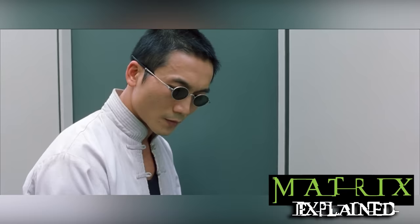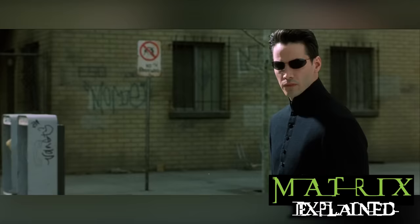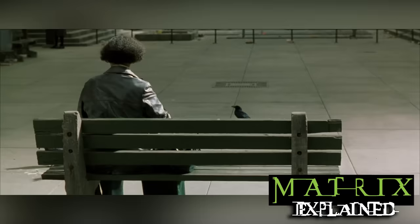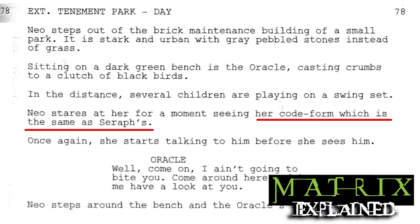Next is probably one of the most disturbing scenes in the entire Matrix saga — one that reveals the Oracle's true evil nature. She says: 'Come around here and let me have a look at you.' This line implies that Neo was afraid of approaching the Oracle. She can sense his presence because Neo can see the Matrix. In the original script, the Oracle emits the same code as Seraph, so Neo was seeing the Oracle as a golden code at that moment.